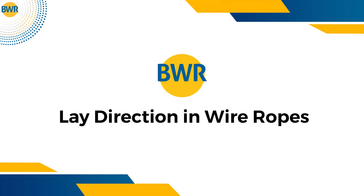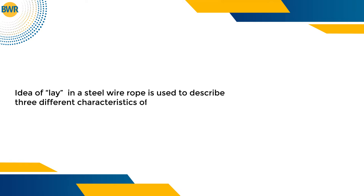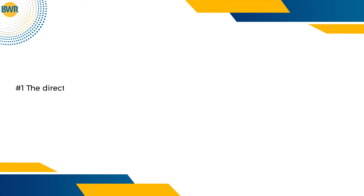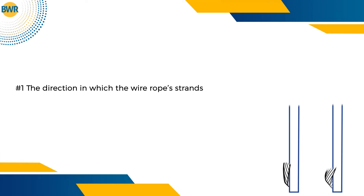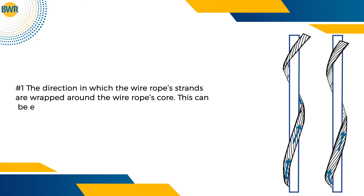Lay Direction in Wire Ropes. The idea of lay in a steel wire rope is used to describe three different characteristics of wire rope. First, the direction in which the wire rope's strands are wrapped around the wire rope's core. This can be either left or right.